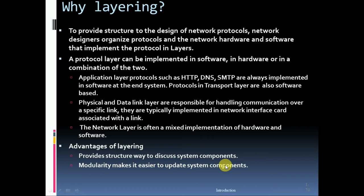Application layer protocols such as HTTP, DNS, and SMTP are always implemented in software at the end systems. Transport layer protocols are also software-based. Physical and data link layers are responsible for handling communication over a specific link and are typically implemented in a network interface card associated with the link. The network layer often has a mixed implementation of hardware and software.